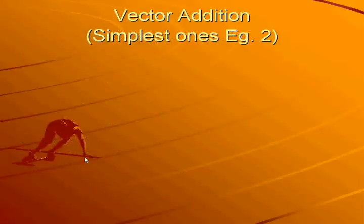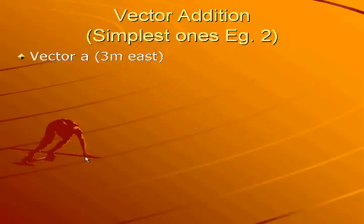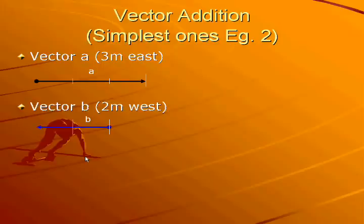Here is another simple example of vector addition. The first vector is vector A, which is a displacement vector of 3 meters to the east, shown by this black arrow. The second vector is vector B, which is a displacement vector of 2 meters to the west, shown by this blue arrow. Please note that vector B begins at the dot here and ends at the arrowhead here.